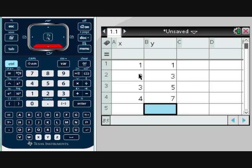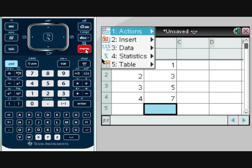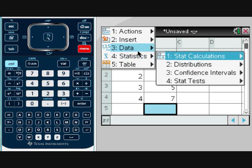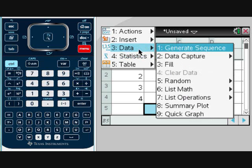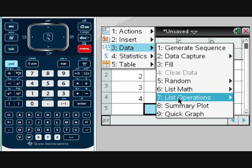Now we're going to go to menu. We're going to go to data number 3, and then we're going to go to option 9, quick graph.